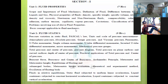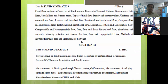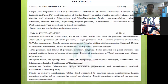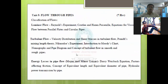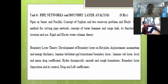Now let us understand the syllabus. There are a total of six units divided into two sections. Section one contains three units — Unit 1, Unit 2, and Unit 3. Section two also contains three units — Unit 4, Unit 5, and Unit 6.